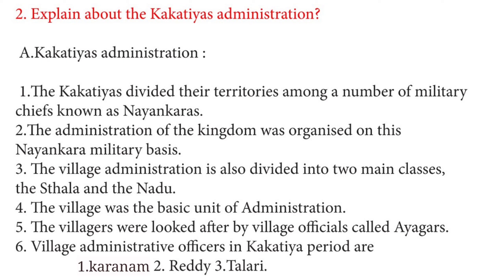Question No. 2: Explain about the Kakathiyas administration. Answer. The Kakathiyas divided their territories among a number of military chiefs known as Nayankaras. The administration of the kingdom was organized on this Nayankara military basis. The village administration is also divided into two main classes, the Sthala and the Nadu. The village was the basic unit of administration. The villagers were looked after by village officials called Ayagars. Village administrative officers in the Kakathiyas period are Karanam, Reddy, and Thalari.